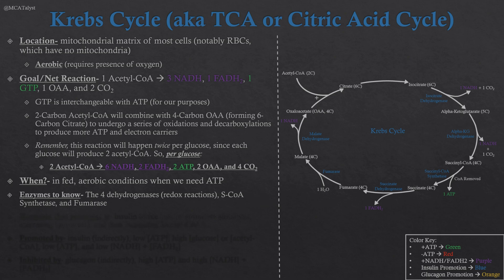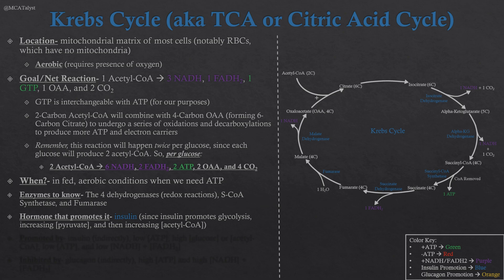The hormone that promotes the Krebs cycle — mainly talking about the postprandial state here — is going to be insulin. Insulin promotes glycolysis, which increases how much pyruvate we have. We bring that pyruvate into the mitochondria, and the PDC turns it into acetyl-CoA. So because insulin promotes all of those earlier processes, it increases the reactant of the Krebs cycle — acetyl-CoA — therefore promoting it.